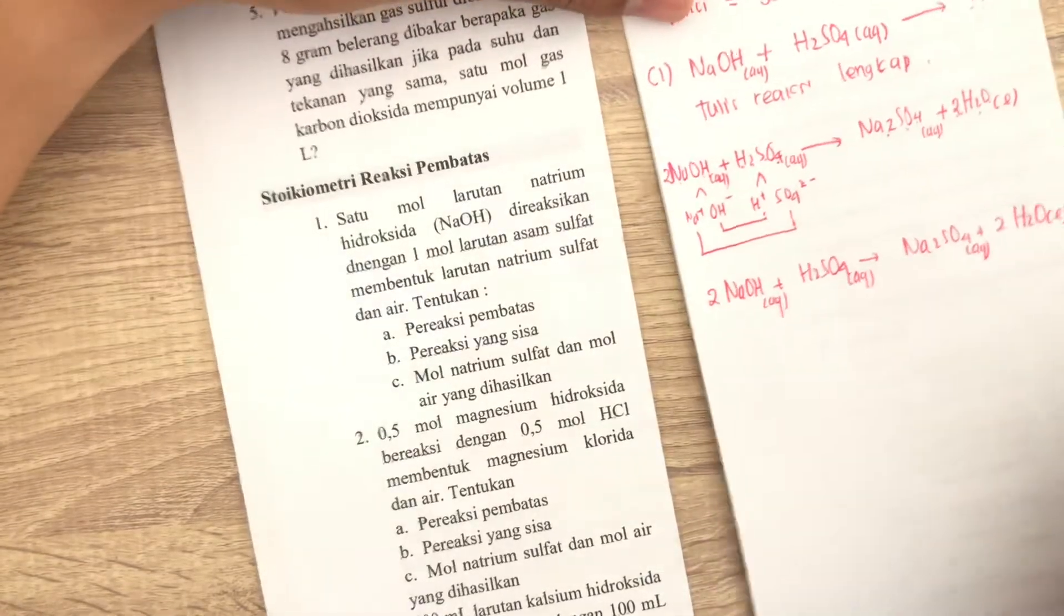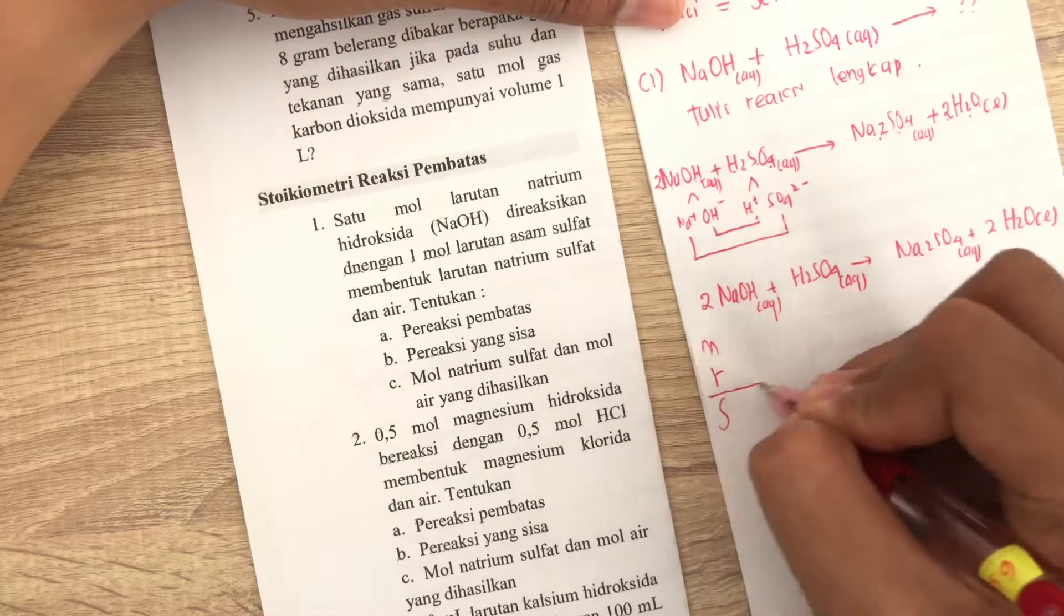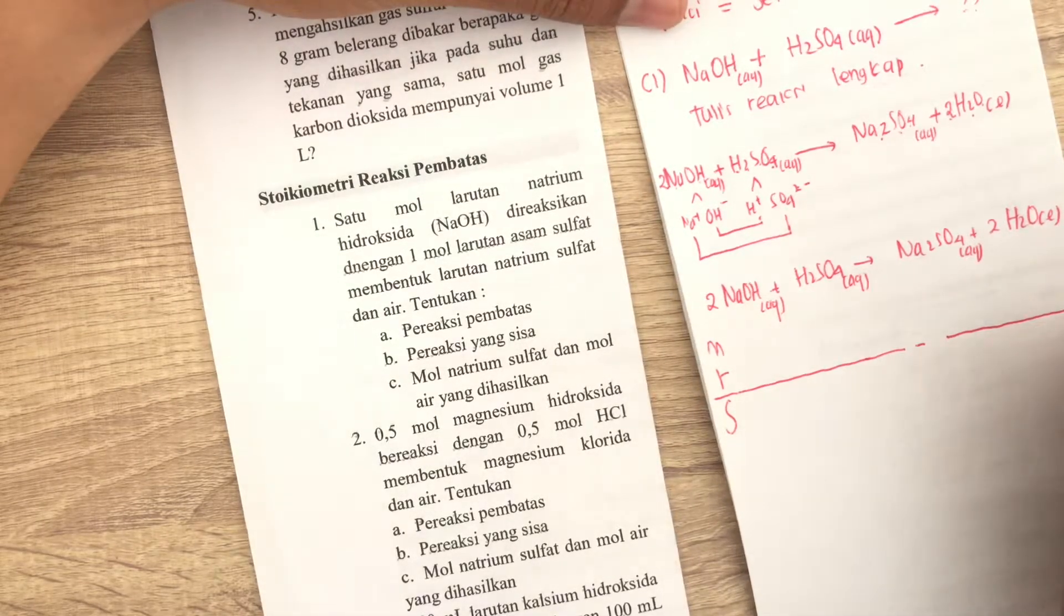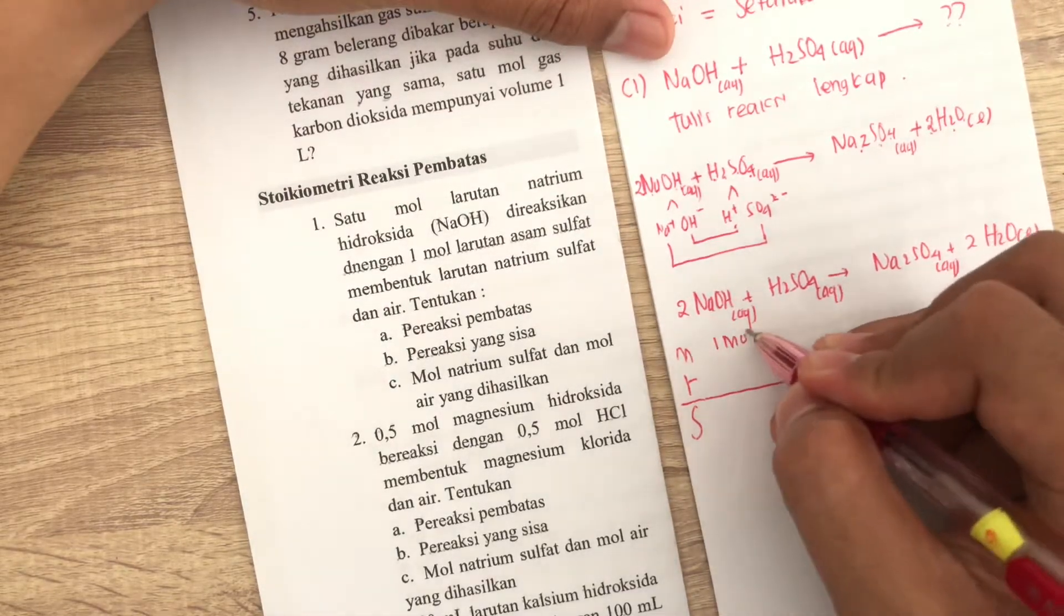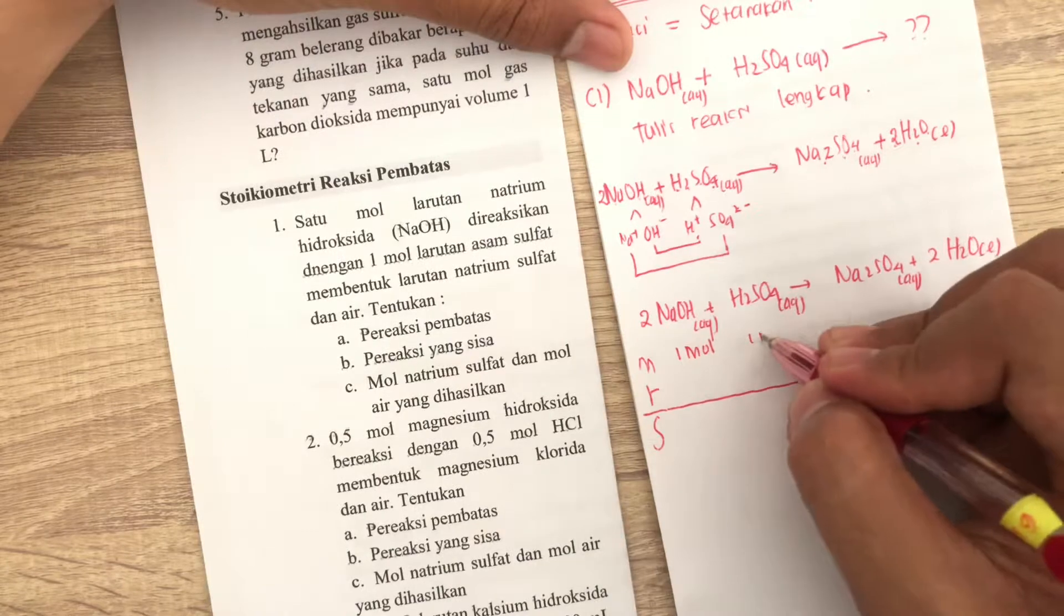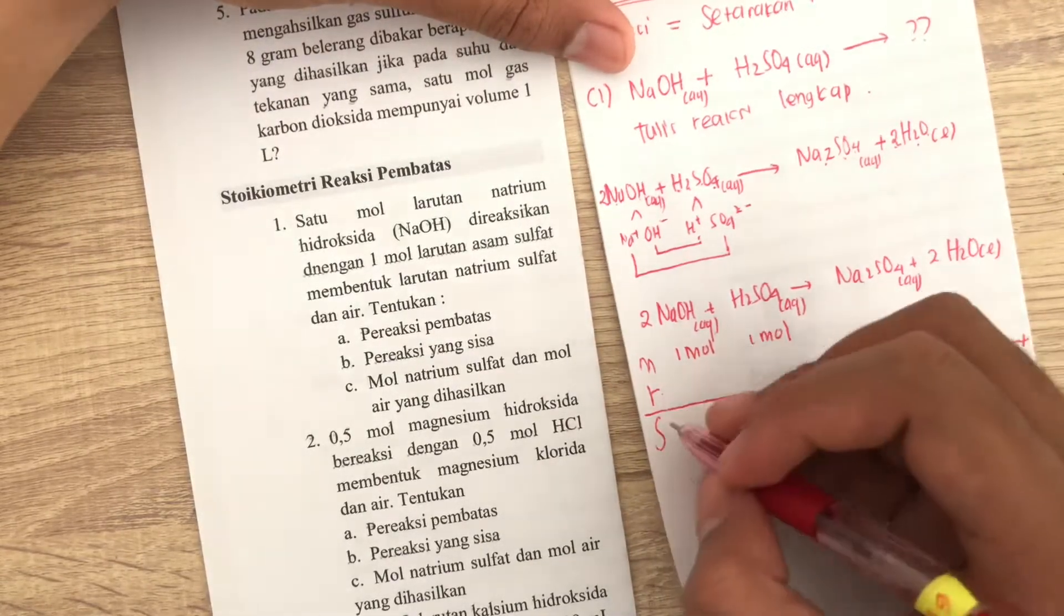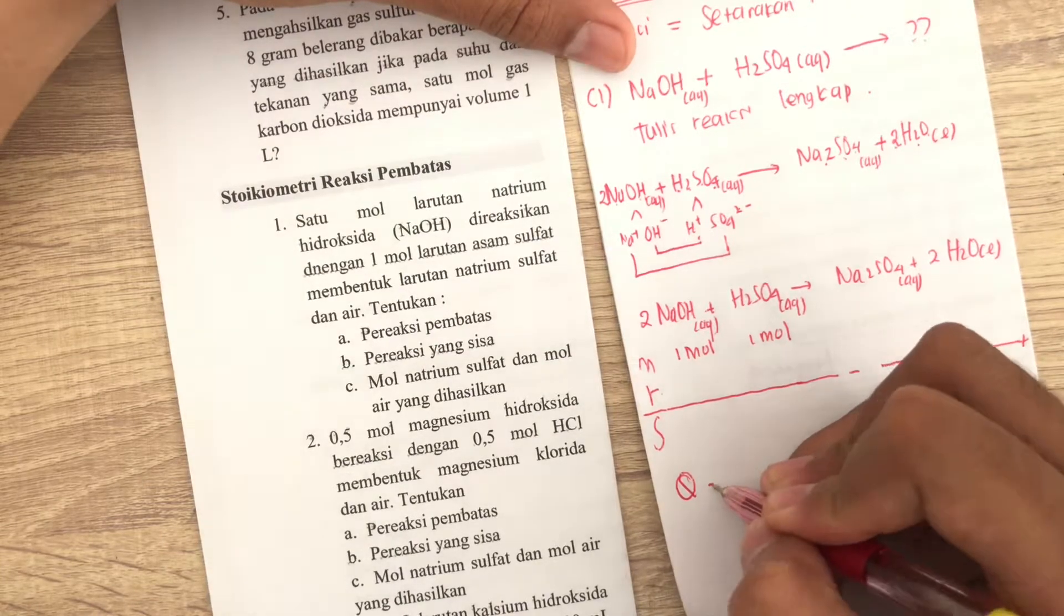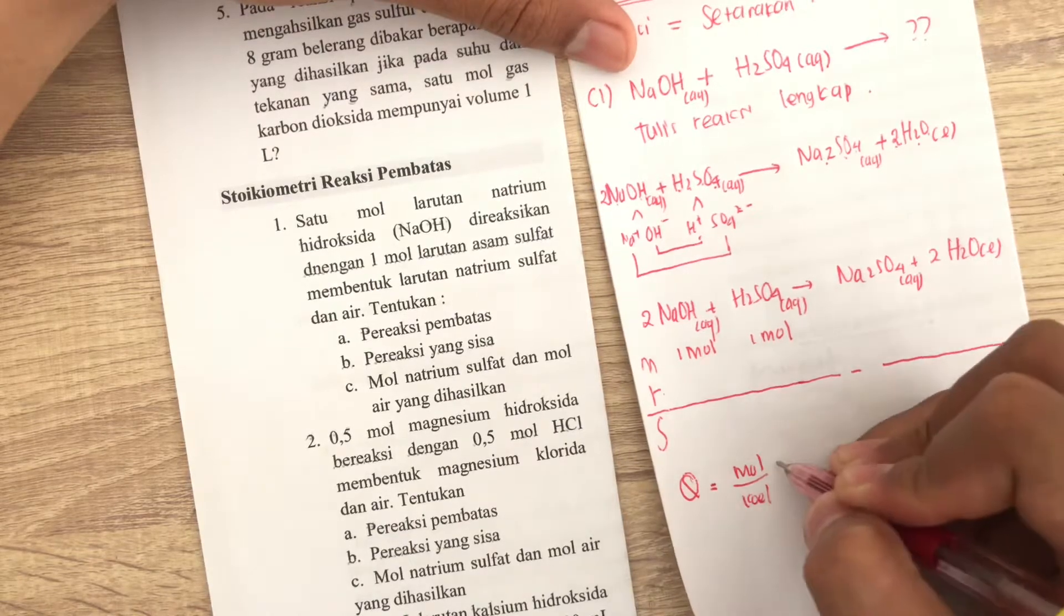Karena kita stoikiometri, otomatis kita akan nulis mula reaksi sisa, atau MRS. Disini dikurang, kalau produk berarti dijumlah. Gimana? Kita tulis tadi, yang diketahui adalah 1 mol. Disini juga 1 mol. Gimana cari tahu mana reaksi pembatasnya? Kita ngecek nilai Q. Q itu apa? Dia adalah mol dibagi dengan koefisien. Mol mula-mula.